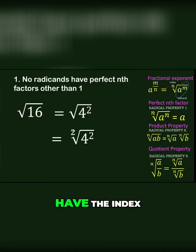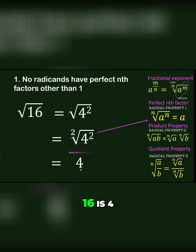You now have a case where the index and the exponent are the same, which is exactly the perfect n-factor form. Therefore, this can be simplified as the base a. In this case, a is 4, so the simplified form of the square root of 16 is 4.